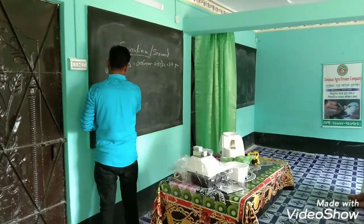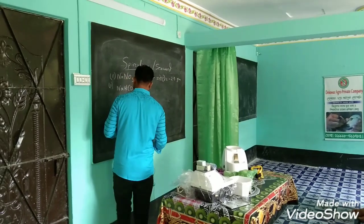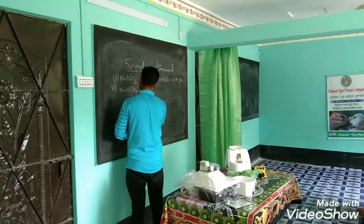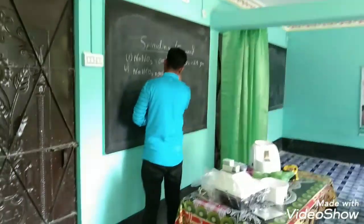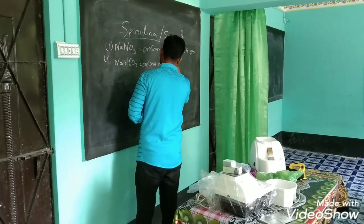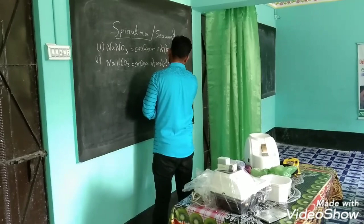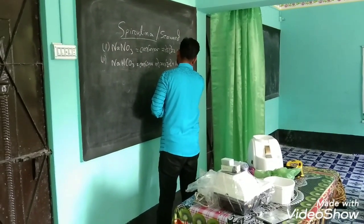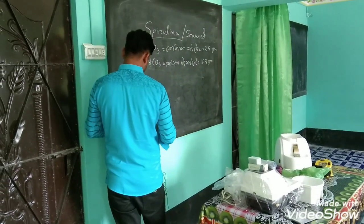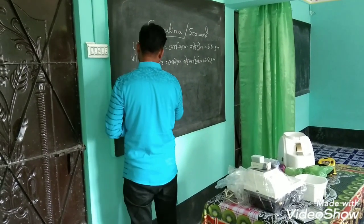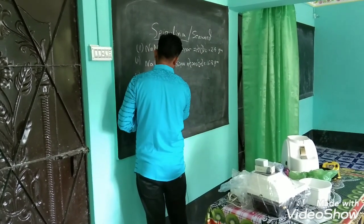Sodium Bicarbonate. NaCO3. Sodium Bicarbonate. 16.8 grams. The number that is covered as potassium chloride — KCl. Say: potassium chloride.